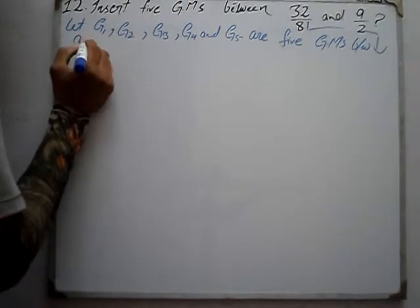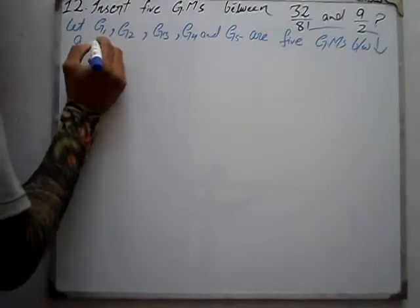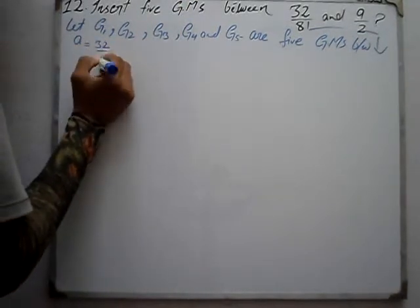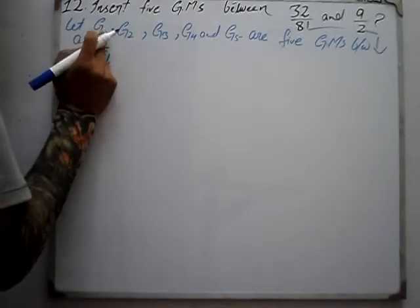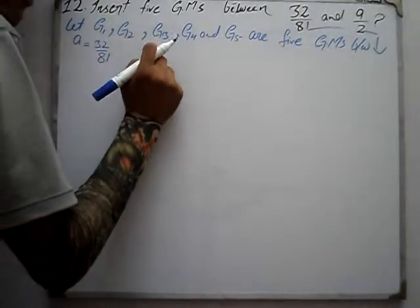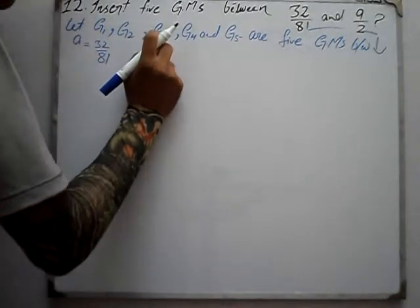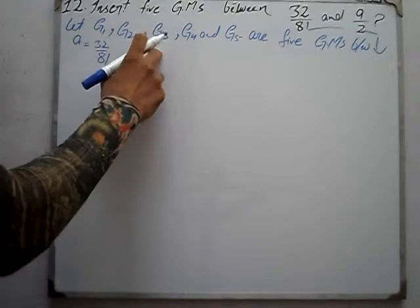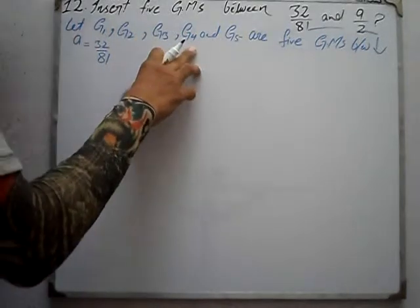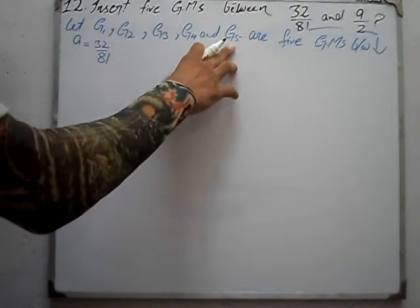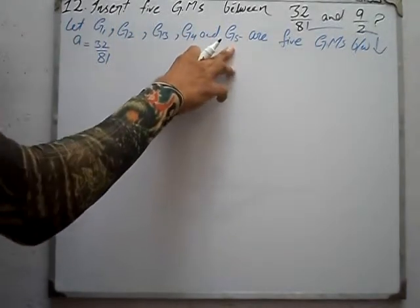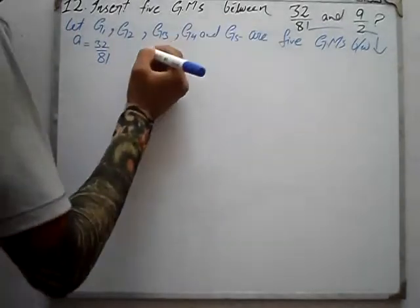If we look at the sequence: A1 is 32 over 81, then A2 = G1, A3 = G2, A4 = G3, A5 = G4, A6 = G5, and A7 is the last term.